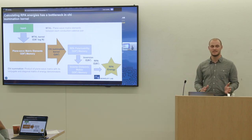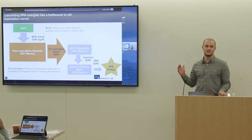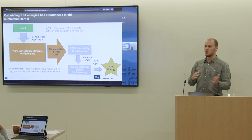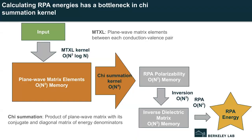The chi summation kernel performs a matrix inner product — a product of this plane wave matrix with its complex conjugate along the long N² axis. This reduces the matrix back down to an N² RPA polarizability matrix, which we can then invert and integrate to finally get out our RPA energy.